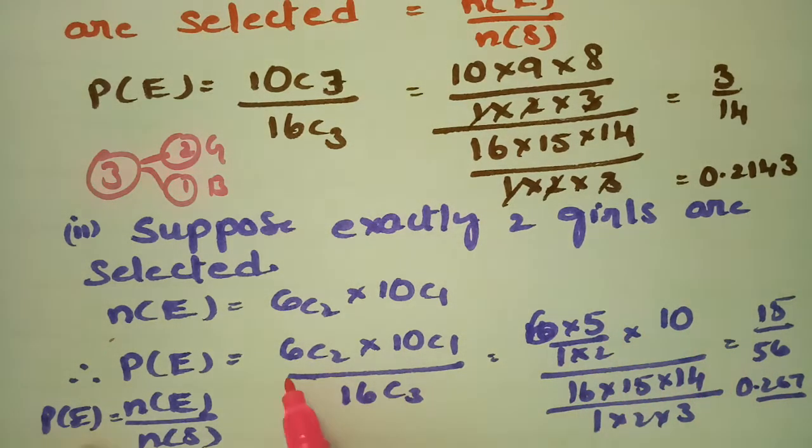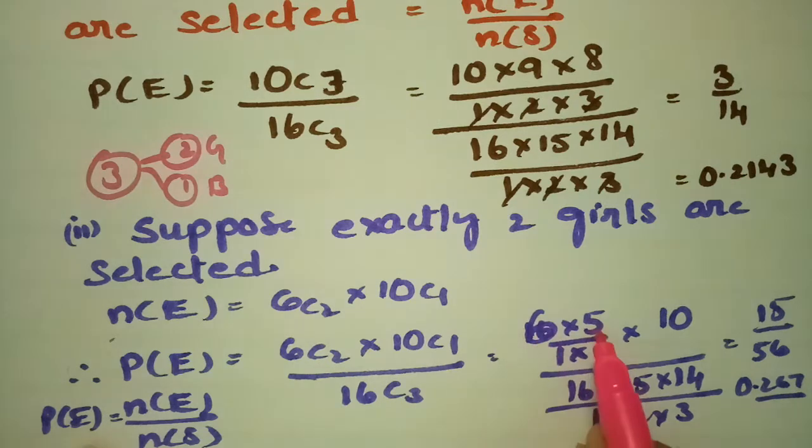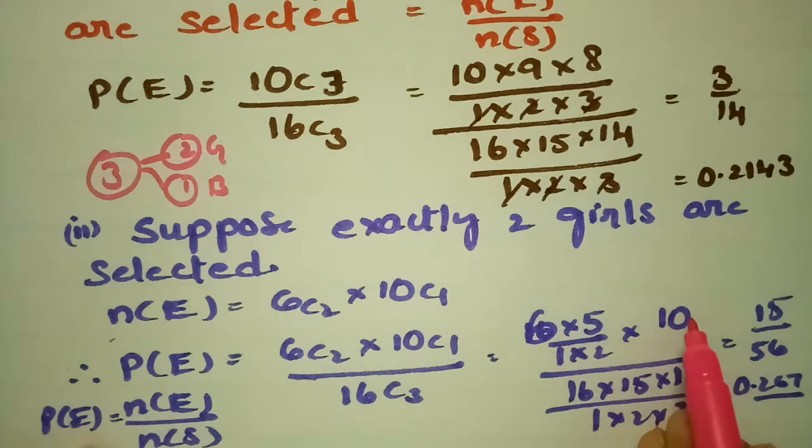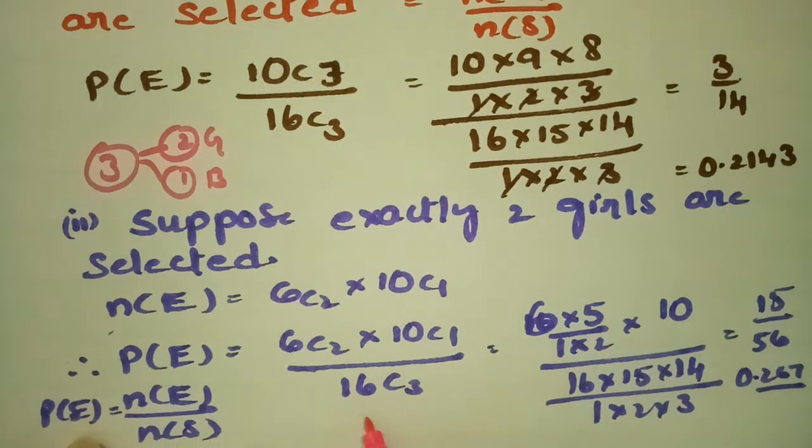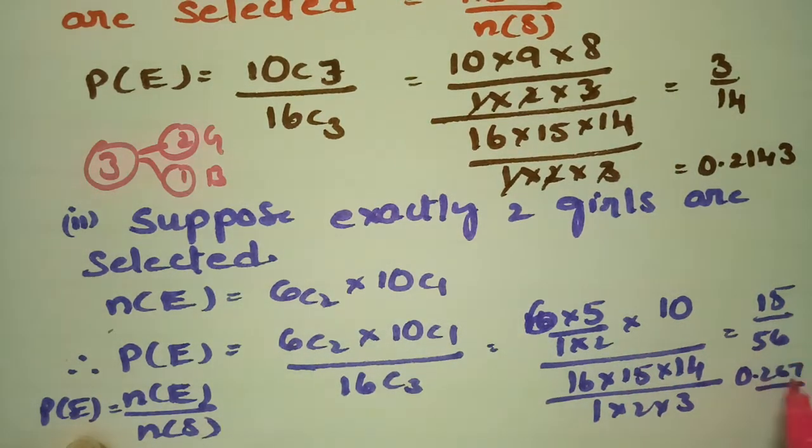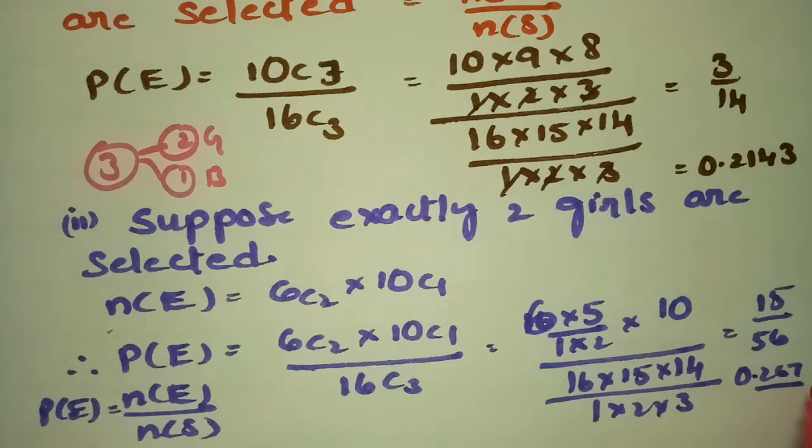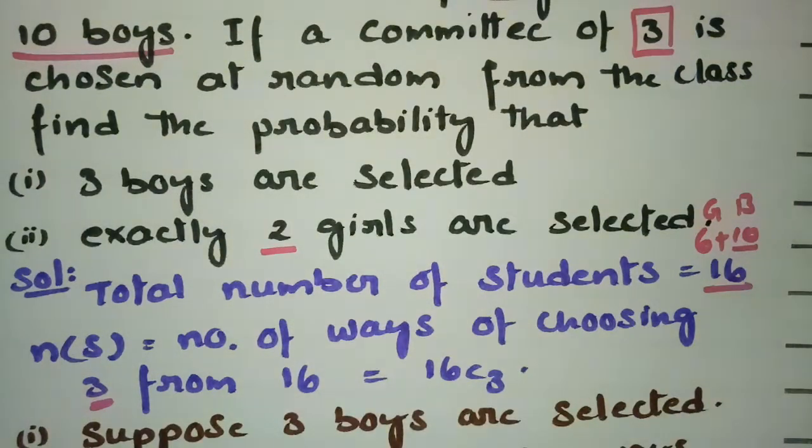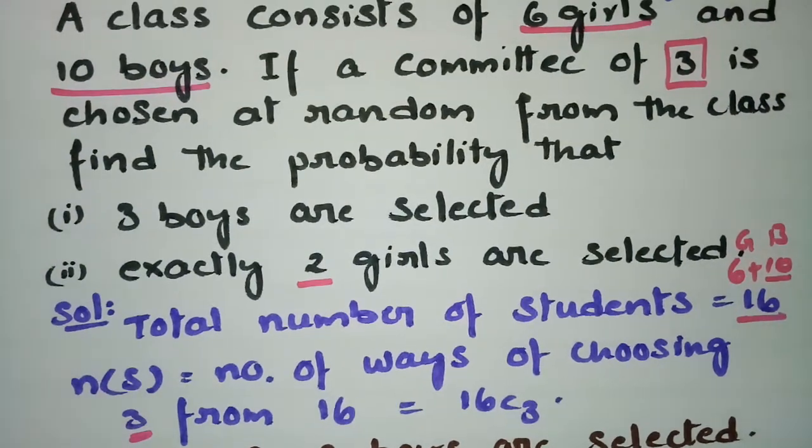This is the calculation part. 6C2 is 6 × 5 by 1 × 2, times 10. This is 16 × 15 × 14 by 1 × 2 × 3. If I calculate and cancel, this will be 15/56, that is 0.267.